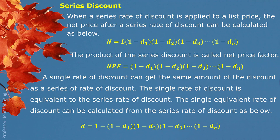So (1 minus d) gives you the discount, which equals (1 minus d1)(1 minus d2)(1 minus d3) ... until (1 minus dn) for the series discount — the total discount obtained is the same.